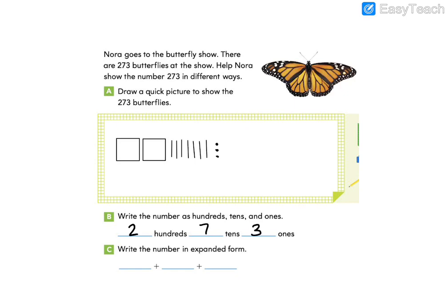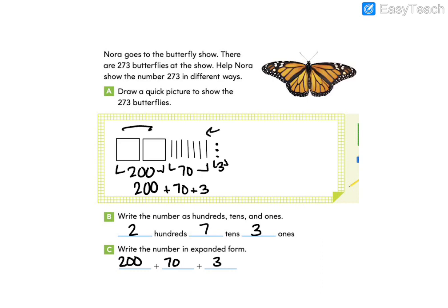Go ahead and write that in expanded form. You should have written 200 plus 70 plus 3. Now let's look at how these are the same. Each of these show value — 200 is the value of those two hundreds blocks, 70 is the value of our ten sticks, and 3 is the value of our ones cubes. So this is showing that we would add these three together — we would push all of these blocks to get to 273.